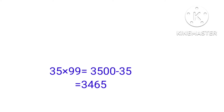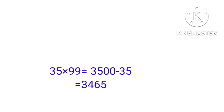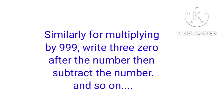For 35 into 99: here 99 is a two-digit number, so write two zeros after the number. Then subtract the number: 3500 minus 35 equals 3465. Similarly, for multiplying by 999, write three zeros after the number, then subtract the number, and so on.